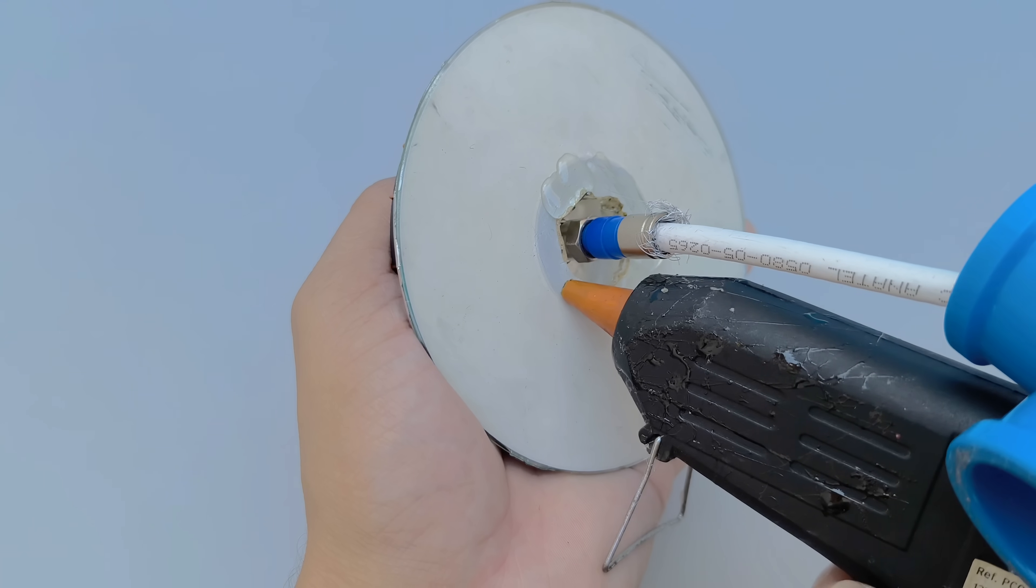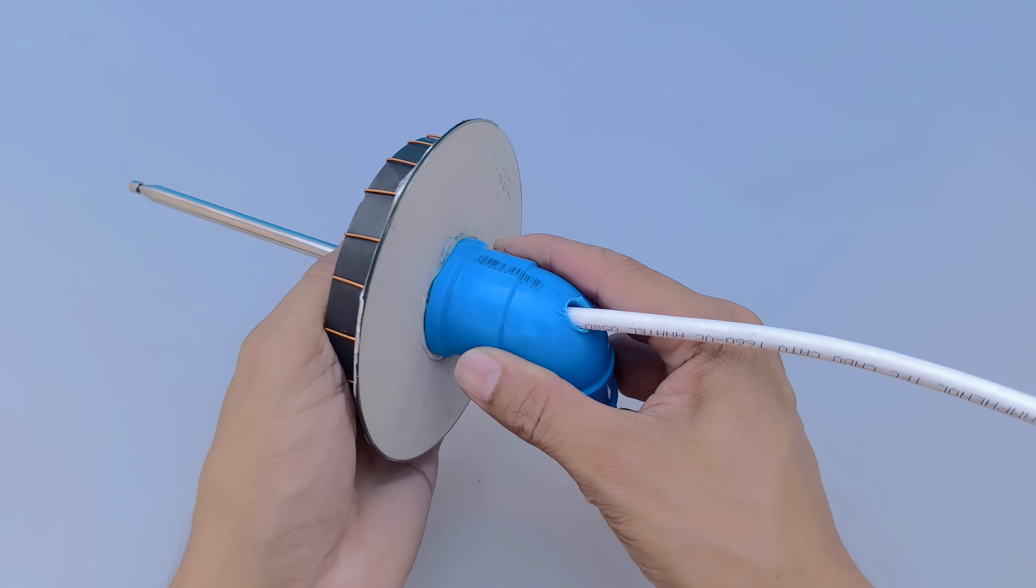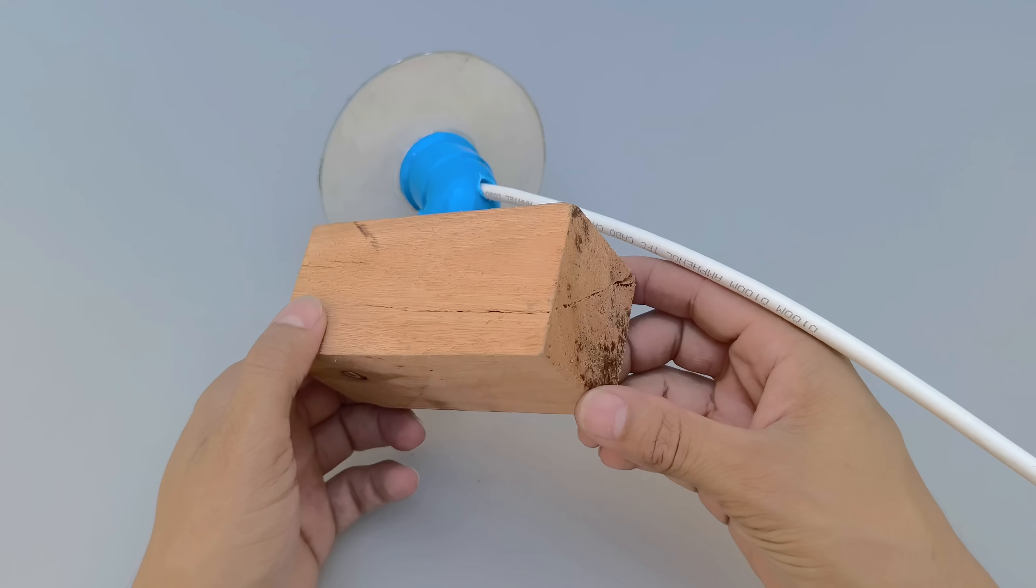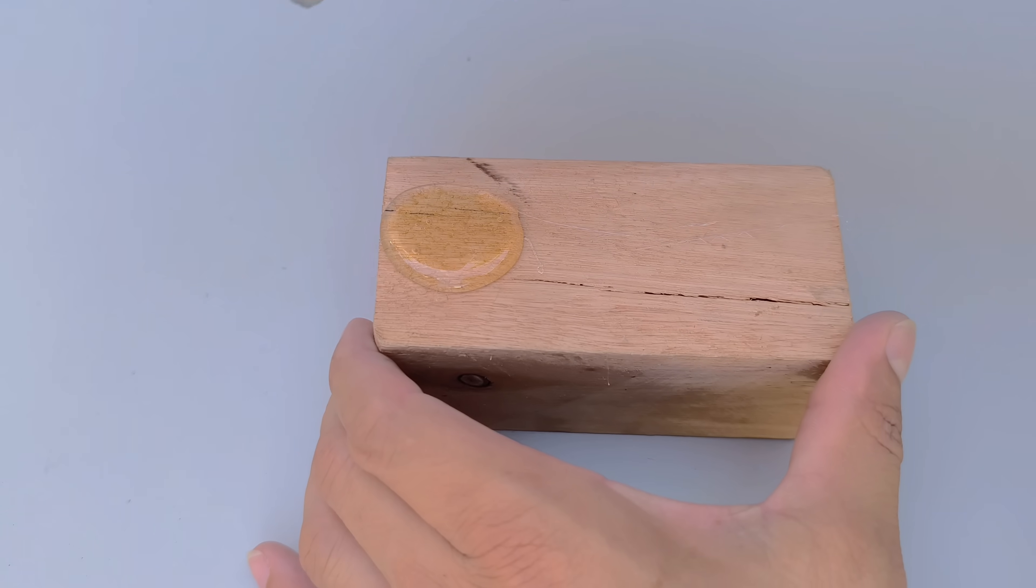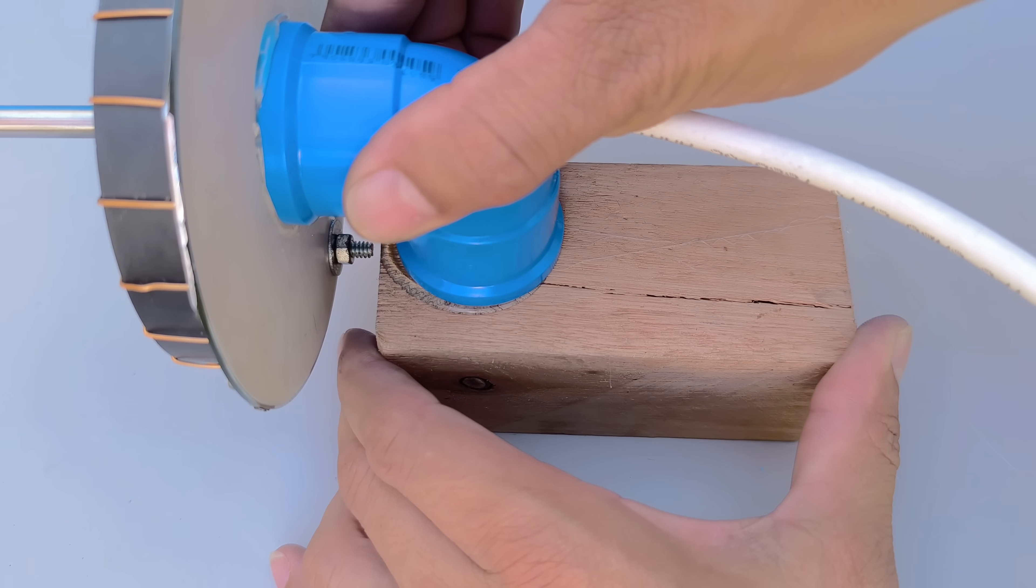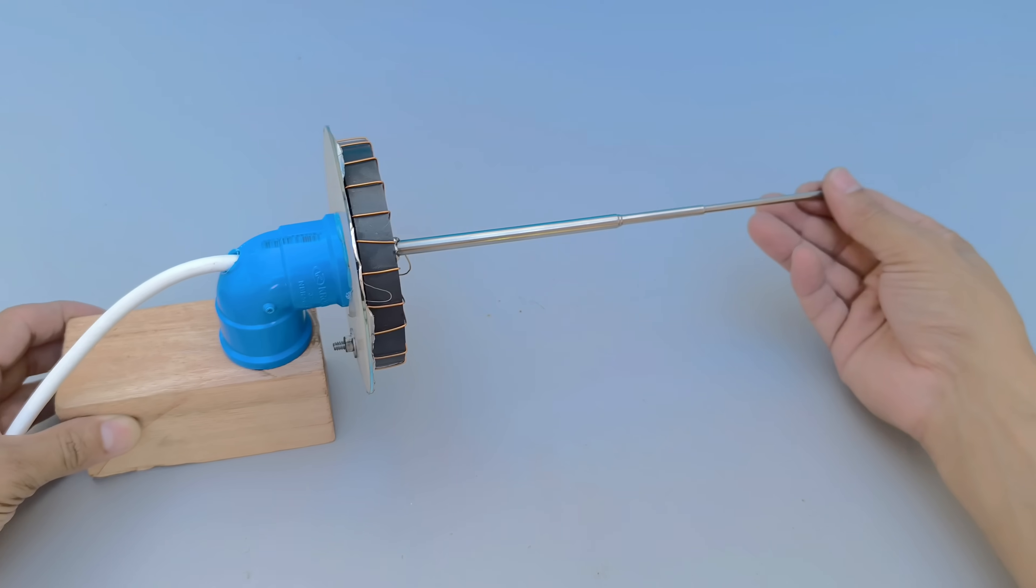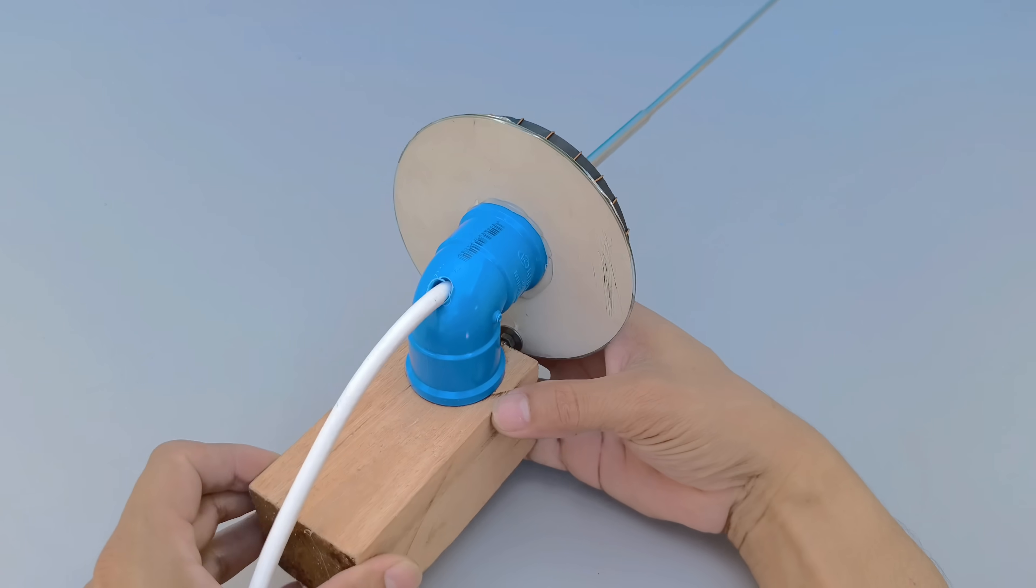Next, attach the PVC elbow to the bottom of the CD-ROM using hot glue. This will provide a sturdy, well-aligned structure to support the assembly. Finally, we will use a piece of wood approximately 12 centimeters long, which will act as the support base for the entire device. Fix the PVC elbow to this wooden base, also using hot glue or another suitable adhesive, ensuring stability.